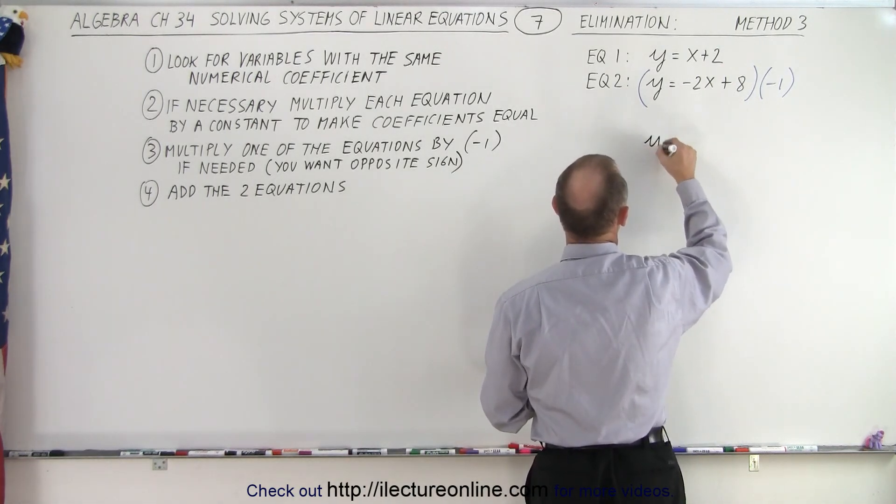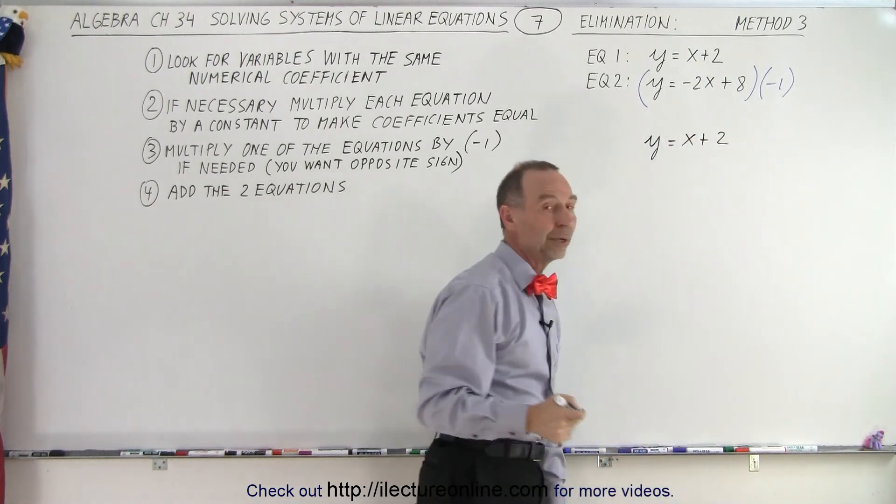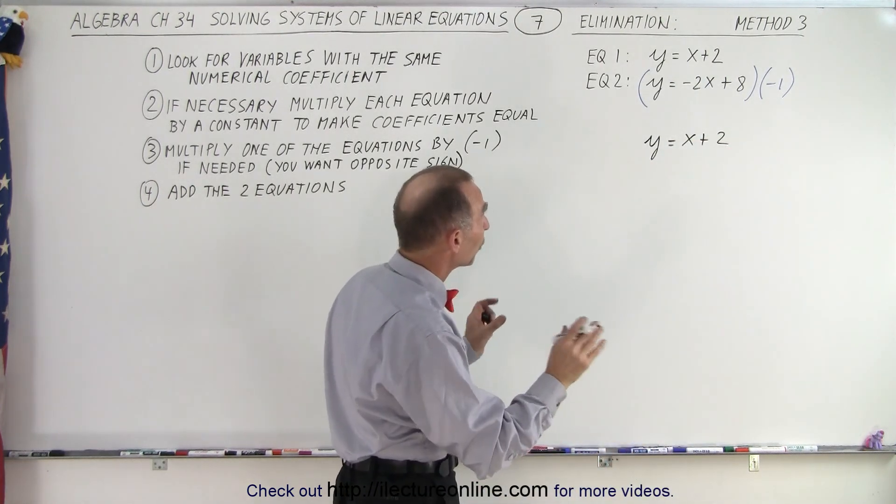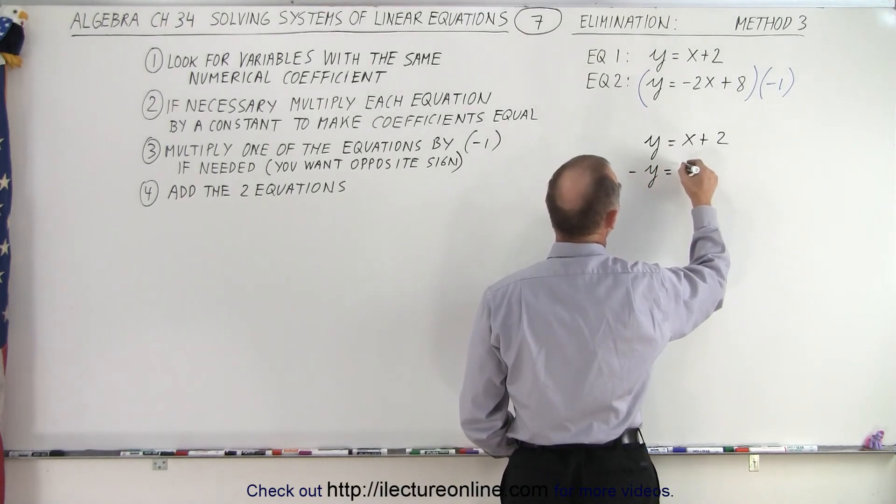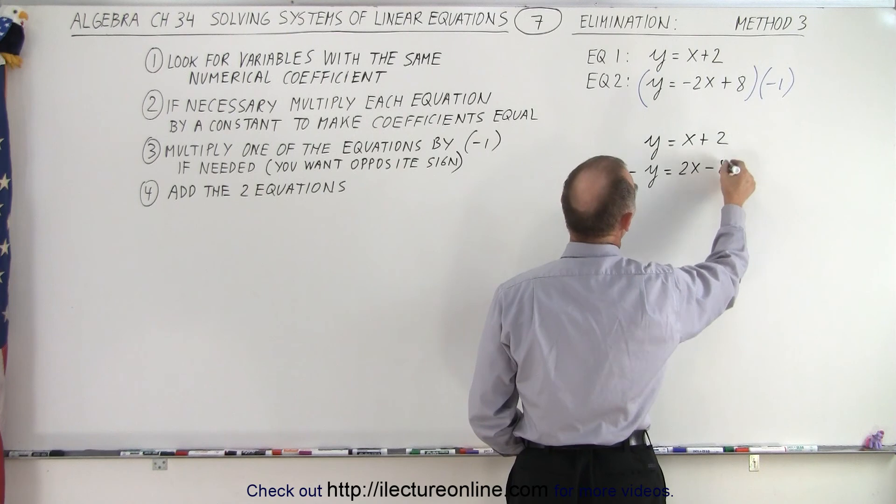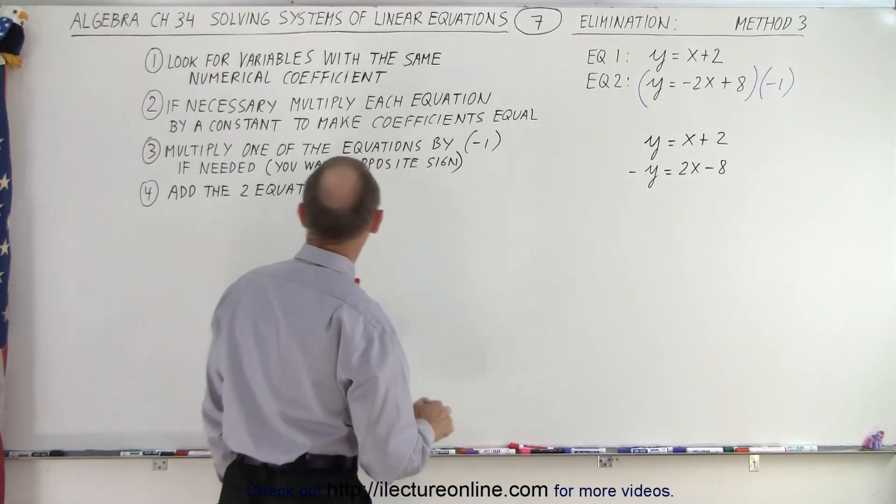So what we're going to do here is write the two equations again, y equals x plus 2. But now I rewrite the second equation by multiplying both sides by negative 1. So we get negative y equals positive 2x minus 8. So simply, on both sides of the equation, everything changes signs.